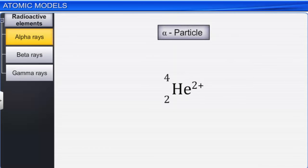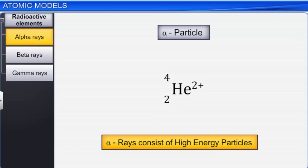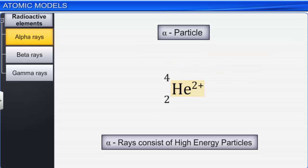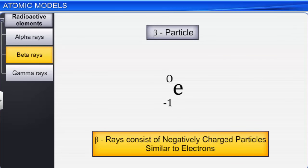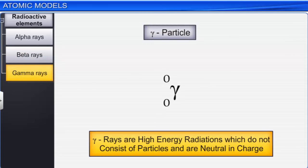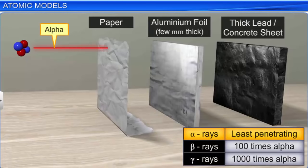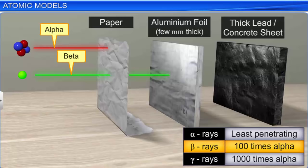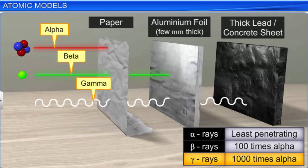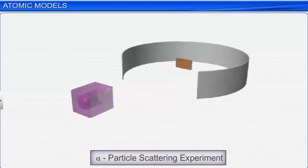Rutherford found that alpha rays consist of high energy particles carrying two units of positive charge and four units of atomic mass — hence they are dipositive helium nuclei. The beta rays are negatively charged particles similar to electrons. Gamma rays are high energy radiations like x-rays. Unlike alpha and beta rays, gamma rays do not contain particles and are neutral in nature. The alpha particles have the least penetrating power among the three; beta particles have nearly 100 times, and gamma rays have 1000 times more penetrating power than alpha particles.